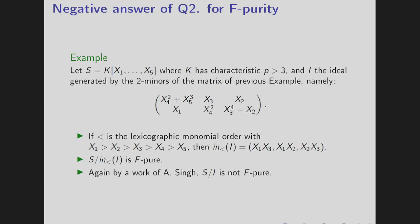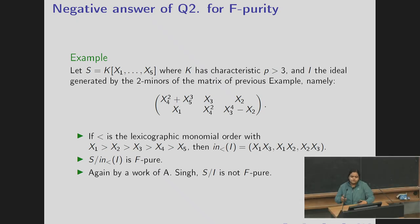The negative answer for the F-purity, the same example but now the characteristic is greater than 3. Then we take the ordering is now changed. We take the lexicographic ordering X1 greater than X2 greater than X3 greater than X3 and X4. Then the initial ideal is a square free monomial ideal and hence it is F-pure. But again the same for p greater than 3 it is not even F-pure. It is by work of Anurag Singh.